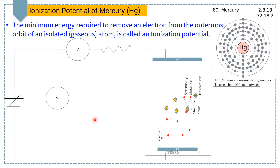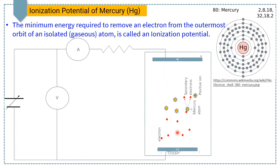Here is the experimental setup used to find the ionization potential of Mercury. This circuit consists of a power supply, emitter, voltmeter, and an evacuated tube fitted with a cathode and anode. The ionization potential of Mercury can be measured by filling this tube with mercury vapor at a low pressure of 10 mm to 50 mm of mercury.